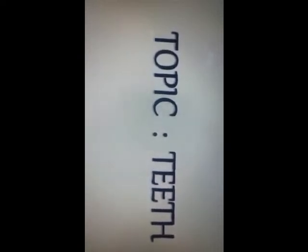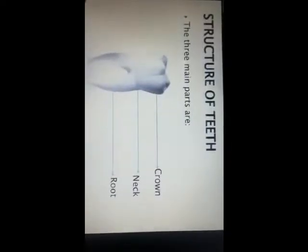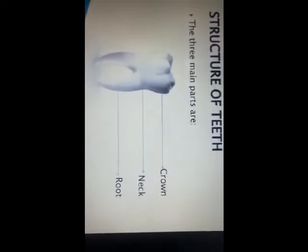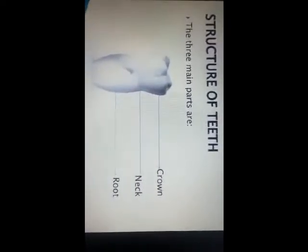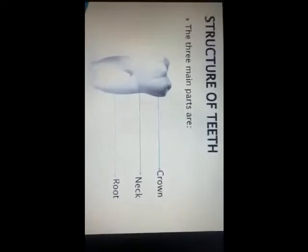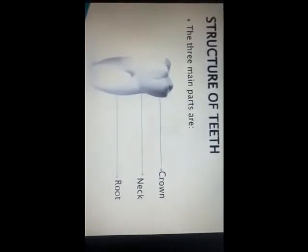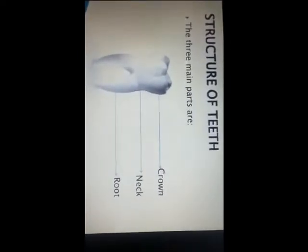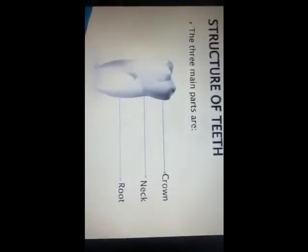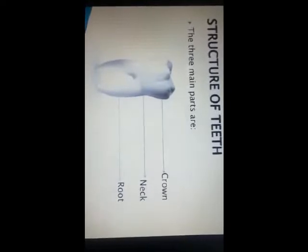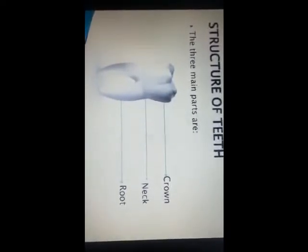Teeth are present in our mouth on the upper jaw and lower jaw. There are three main parts of teeth. The crown is the part that we can see outside the gum. The root is the part of a tooth inside the gum, and the neck is the part between the crown and root.